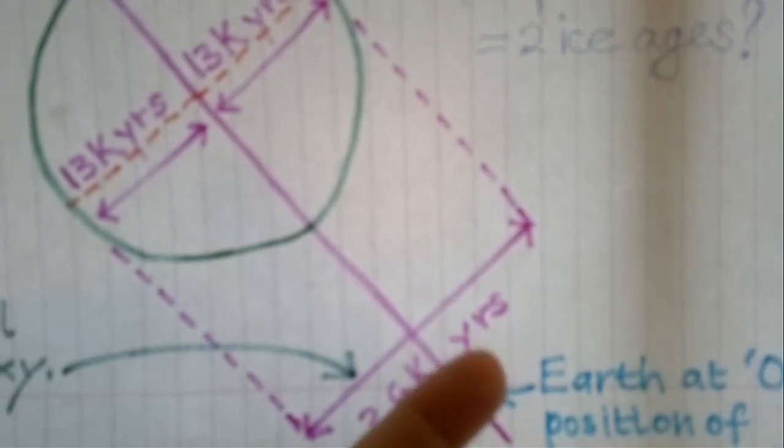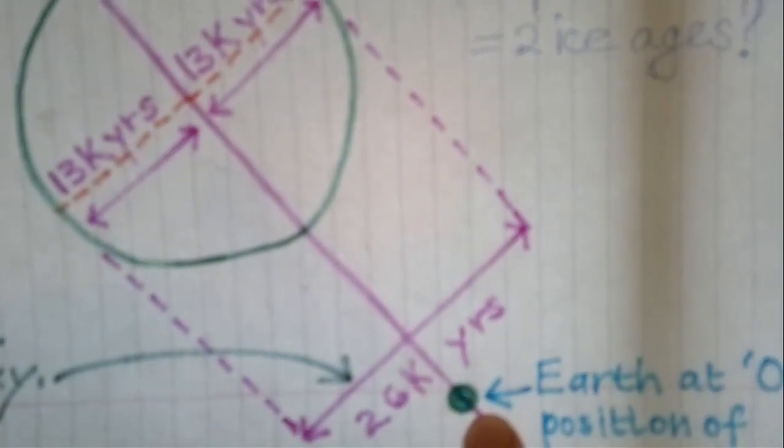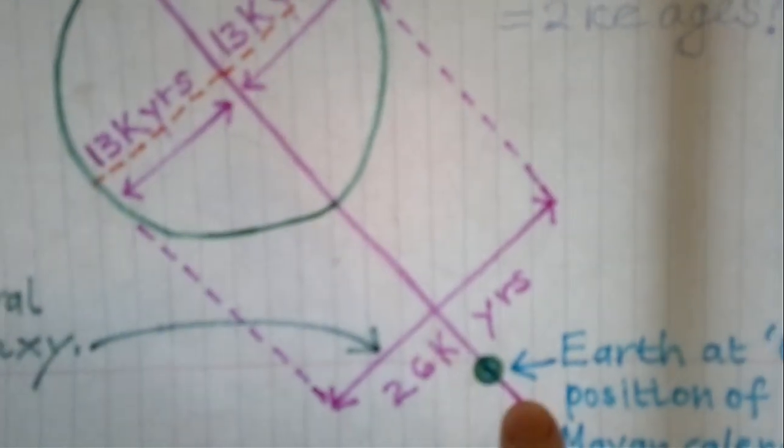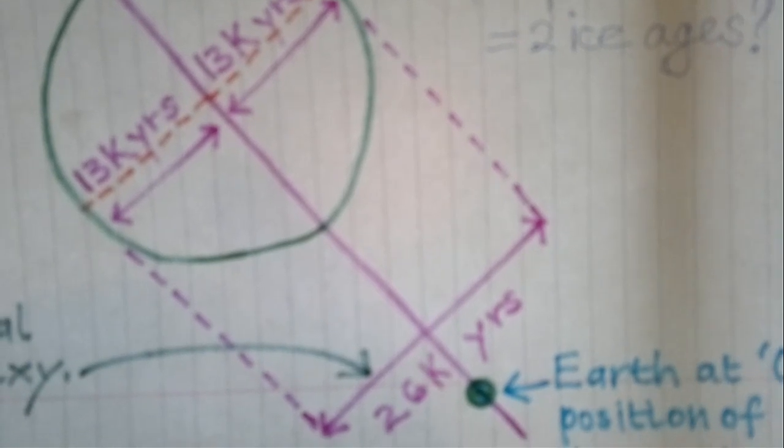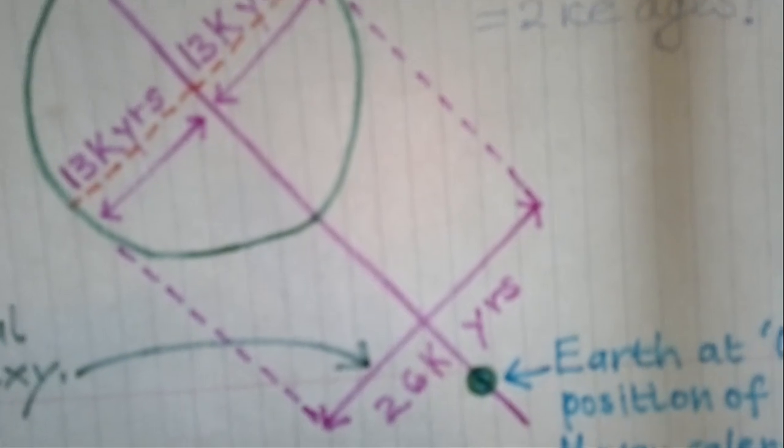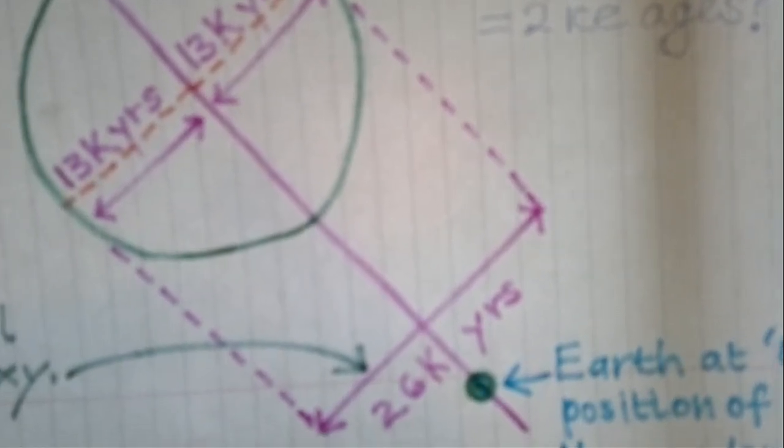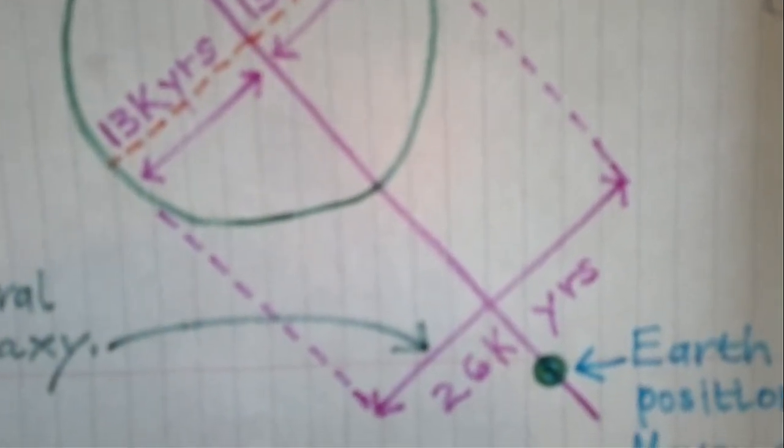So every 13,000 years of these turns, we're going to come into alignment with the dark rift of the galaxy at the center of the galaxy. So I was thinking that maybe the energy focused on the dark rift, or lacking in the dark rift, is a triggering effect, or a marking effect anyway. The Maya mark it as position zero. It's a marking effect anyway.